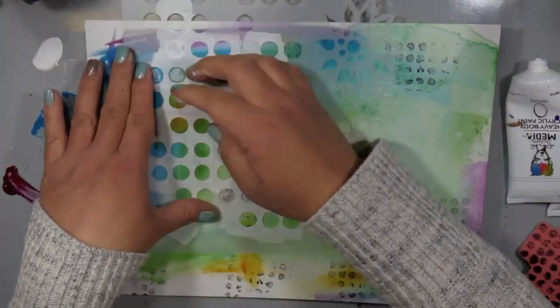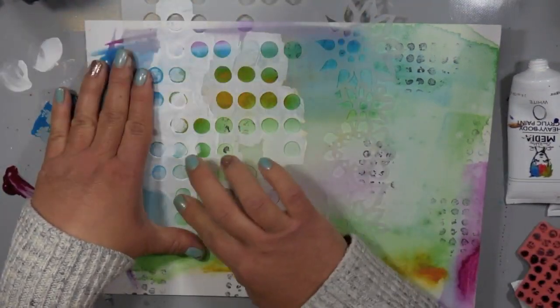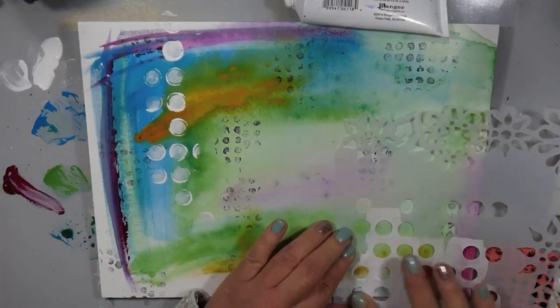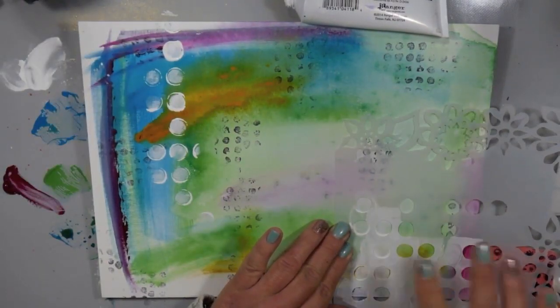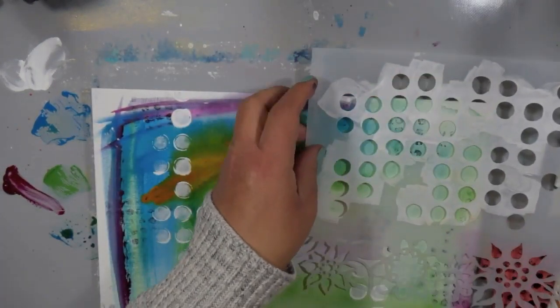So I added some texture with one of Dina Wakely's stamps and her new ink pad. I used the color Night and now I'm bringing in some more texture with some paint and a dilution stencil just to kind of continue the dots around my page.